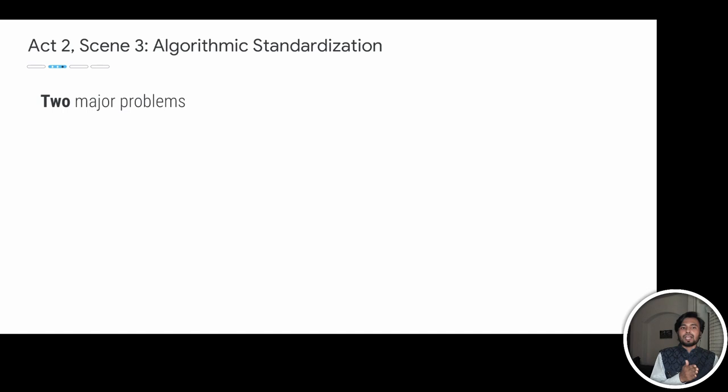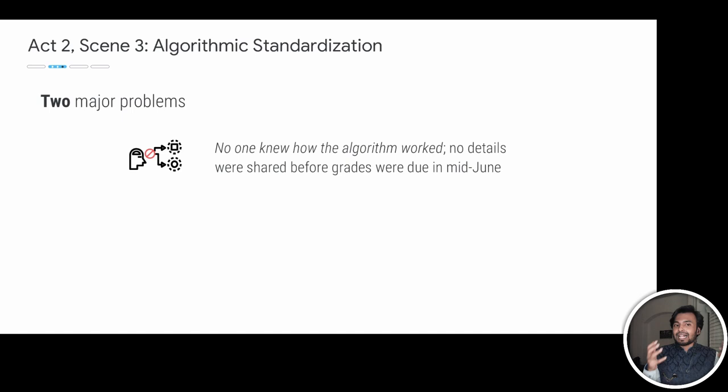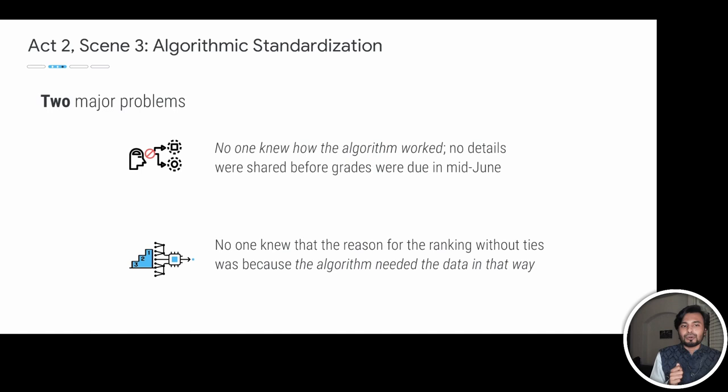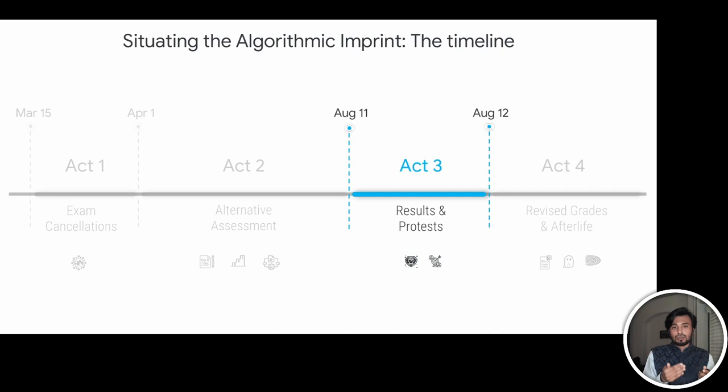Finally, we arrive at the third part of Act 2: the algorithmic standardization. The grades and the ranking were created for one reason only — to do the standardization. But there are two things that make this very problematic. First, none of the participants, especially teachers, knew how this algorithm worked. No details were shared from the boards before grades were due in mid-June. Even the word 'algorithm' doesn't appear in the correspondence. Second, and perhaps most importantly, no one knew that the only reason this non-tie-based ranking was needed was to actually feed the algorithm with the right data. And that becomes very crucial later on.